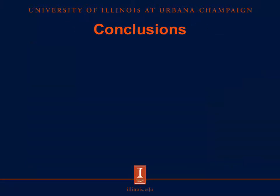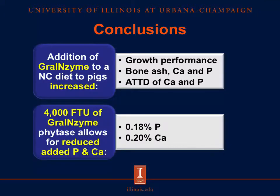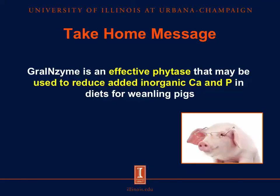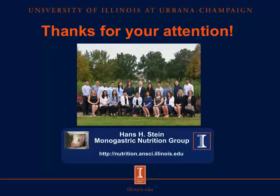Therefore, the conclusions are: addition of grain enzyme to the negative control diet increased the growth performance, the total amount of bone ash, bone calcium, and bone phosphorus, and the apparent total tract digestibility of calcium and phosphorus. The take-home message is that grain enzyme is an effective phytase that might be used to reduce added inorganic calcium and phosphorus in diets for weanling pigs. I would like to thank AgriVida for the financial support and my fellow lab members. You can visit our website at nutrition.nsi.illinois.edu. Thank you for your attention.